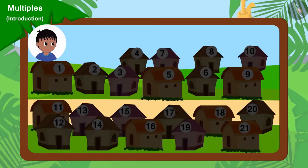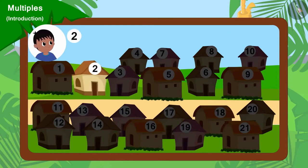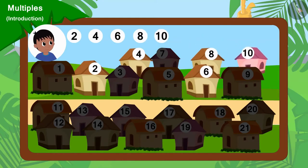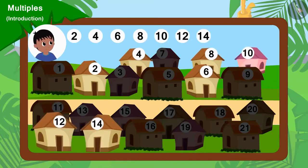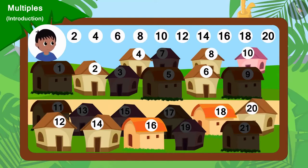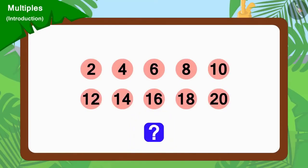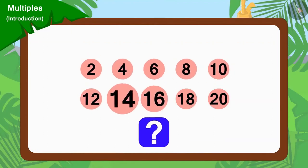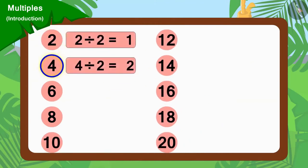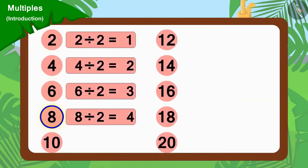Raju will go to collect donations from house numbers 2, 4, 6, 8, 10, 12, 14, 16, 18 and 20. Children, do you see anything special in these numbers? Yes, we can divide all these numbers by 2.